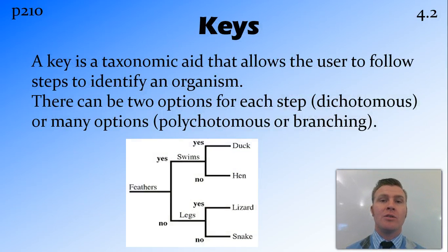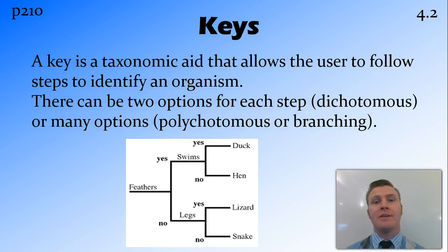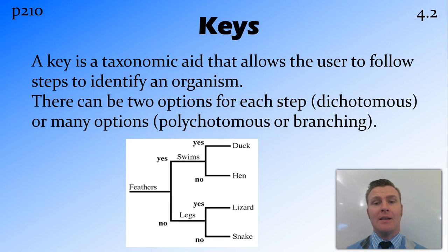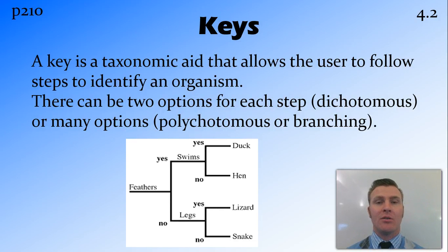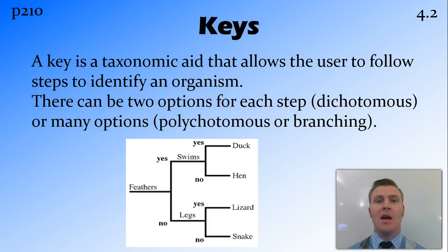Keys are something that we use to help us classify organisms. What they do is help the user to easily identify organisms and the groups that organisms are found in. When making a key, if there are two options at each step, this is called a dichotomous key. However, if there are many options, it's called a polychotomous key, or sometimes a branching key. So there are a few different types of keys that we can use to aid us in classifying and identifying organisms.